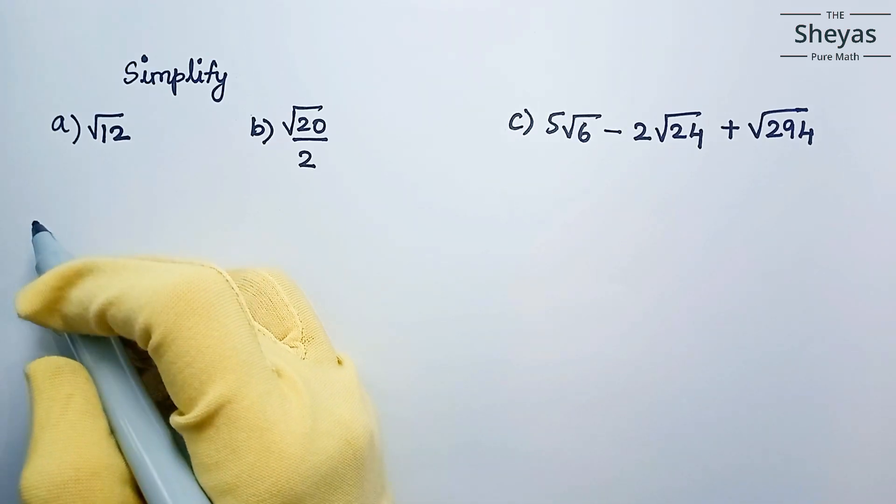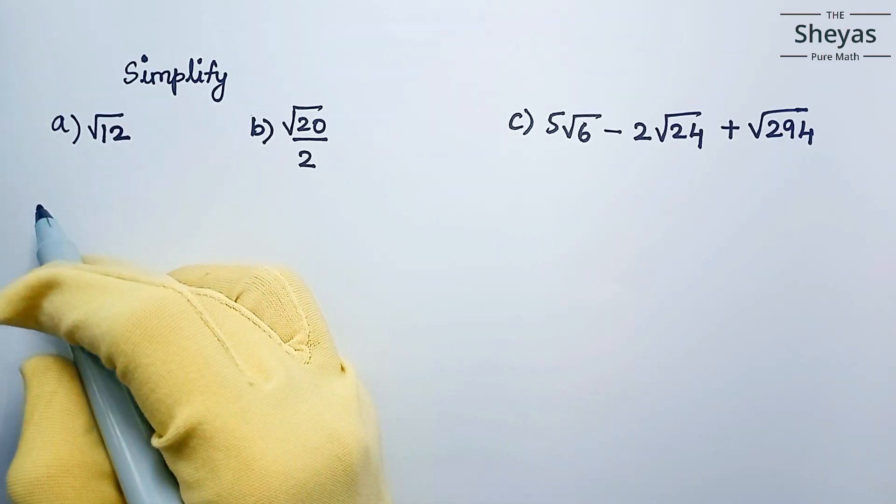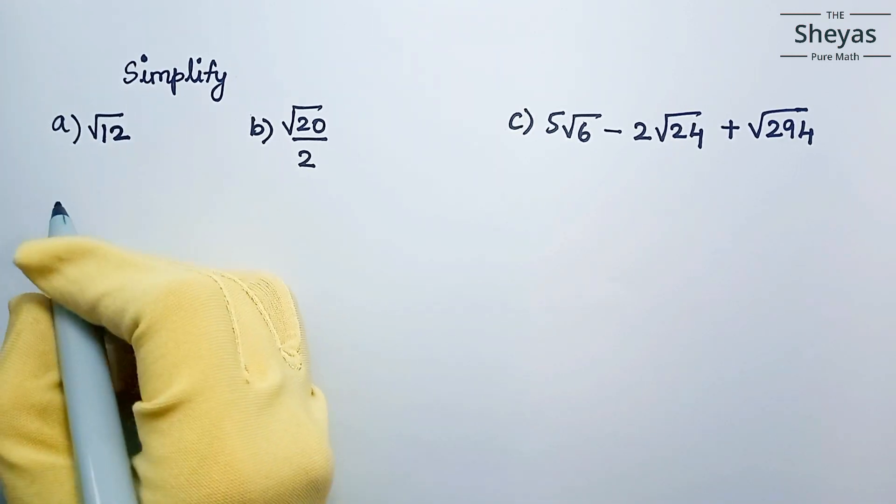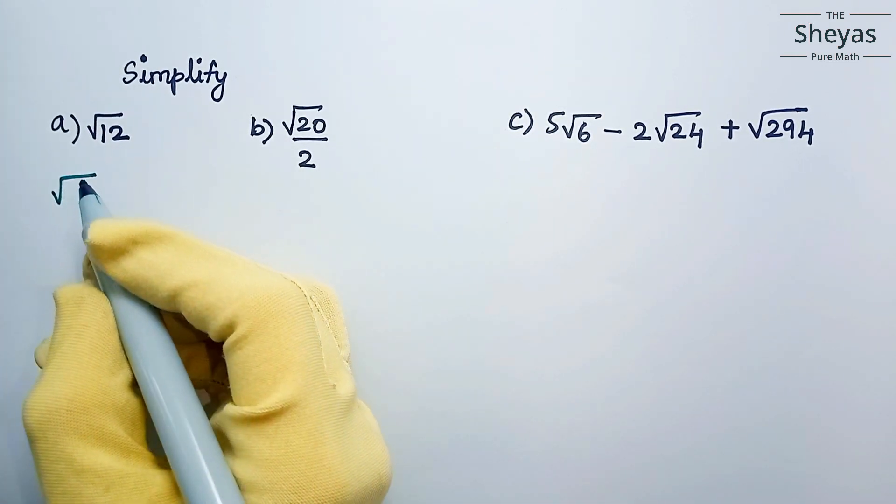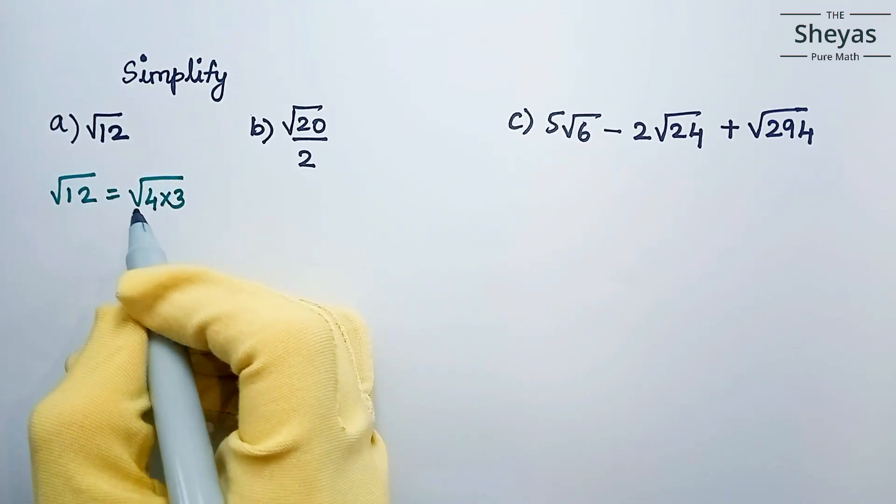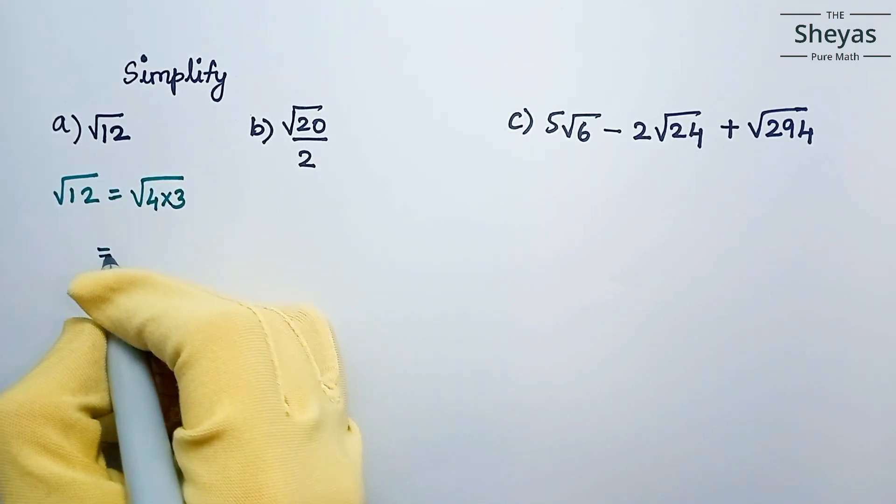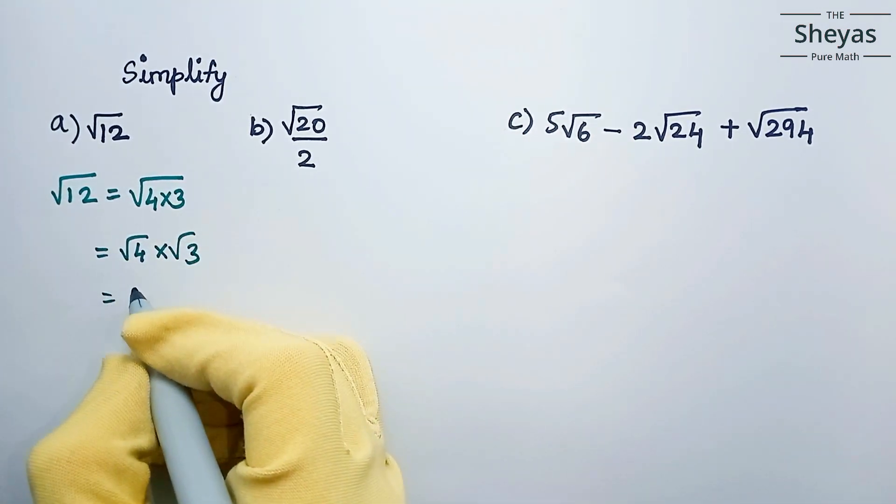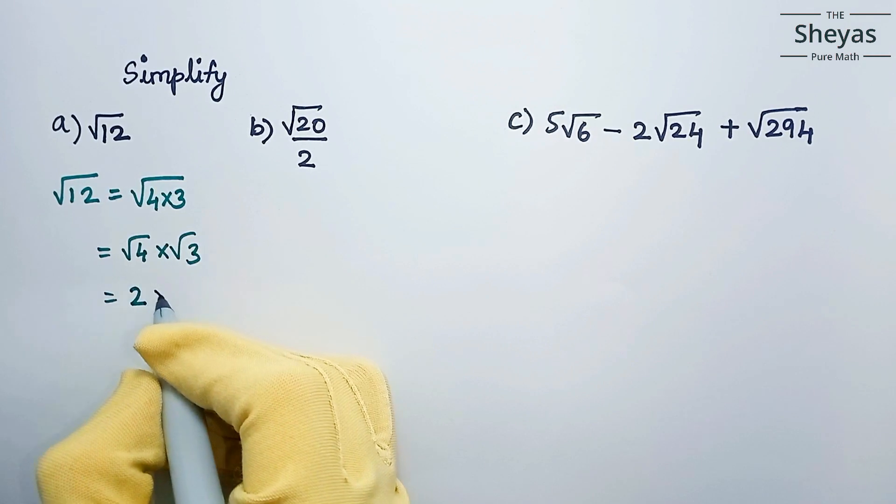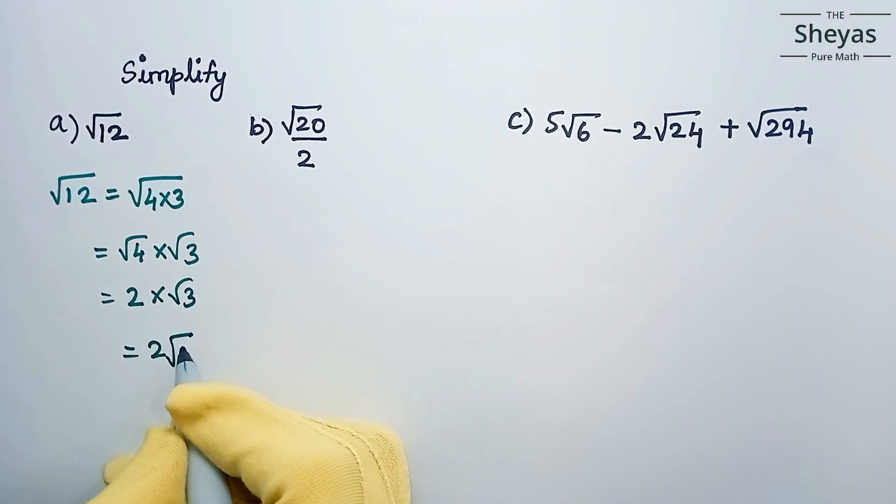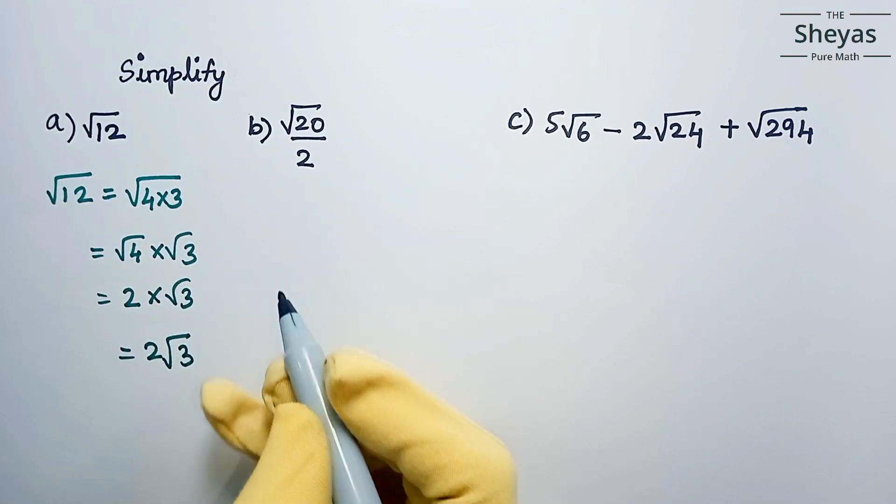Let us solve some problems using the rules of radicals. Simplify root 12. Root 12 can be written as root 4 times 3, which equals root 4 times root 3. Root 4 can be written as 2 times root 3, so 2 times root 3 is 2 root 3. This is the required answer.